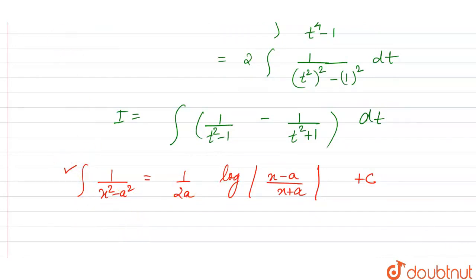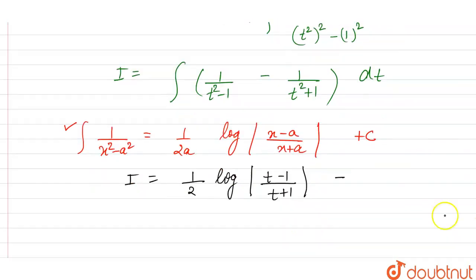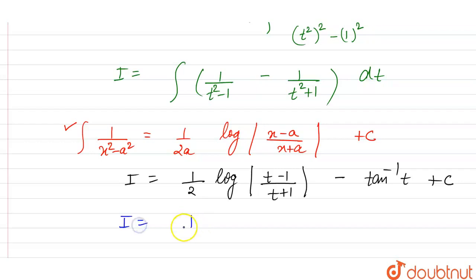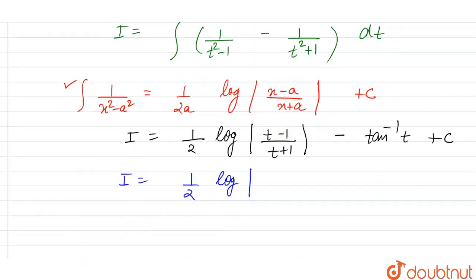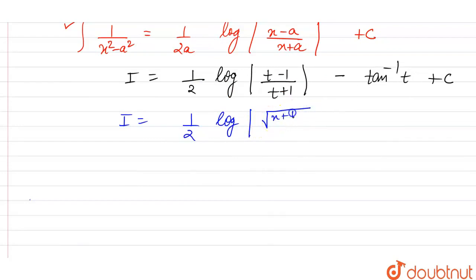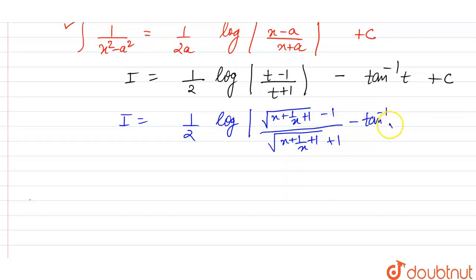Applying this result, we have i is equal to 1 by 2, with a equal to 1, log of modulus of t minus 1 upon t plus 1, minus the integral of 1 upon x squared plus 1, which is tan inverse of t, plus c. And t is nothing but under root of x plus 1 by x plus 1. So putting back, we have under root of x plus 1 by x plus 1 minus 1, upon under root of x plus 1 by x plus 1 plus 1, minus tan inverse of root of x plus 1 by x plus 1, plus c.